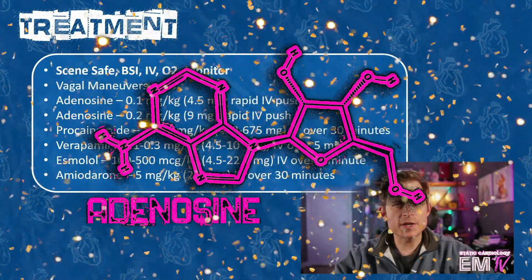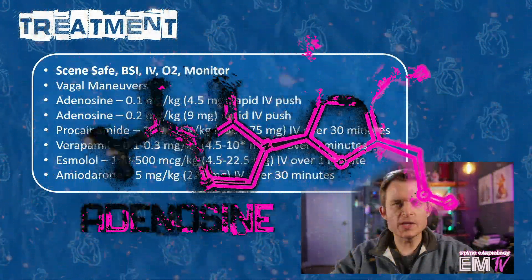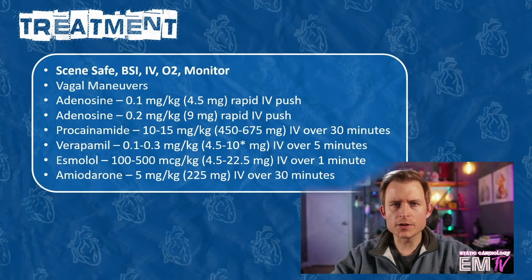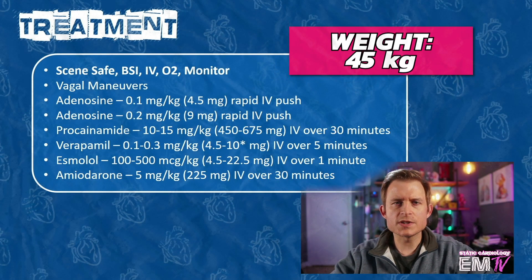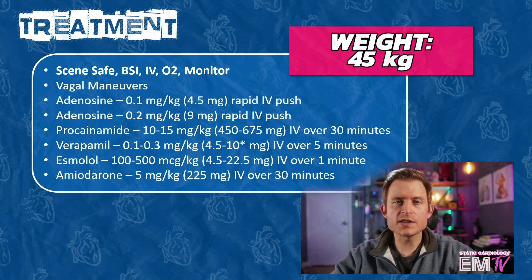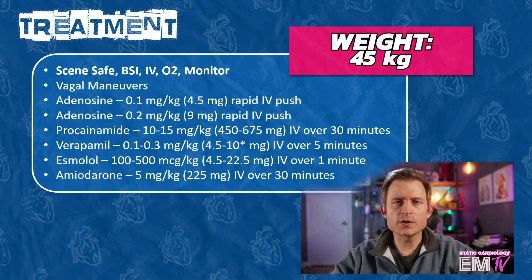Now as this patient is pediatric, weight-based dosing is applicable. The first dose of adenosine is going to be dosed at 0.1 mg per kg, which based on his weight of 45 kilos will come out to 4.5 mg, and this is given as a rapid IV push. The second dose of adenosine is 0.2 mg per kg, which will come out to 9 mg rapid IV push.